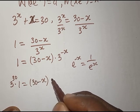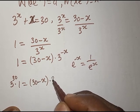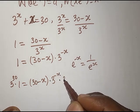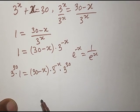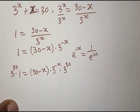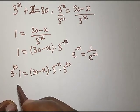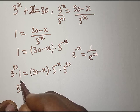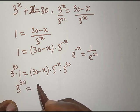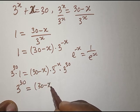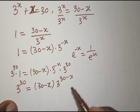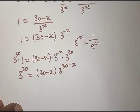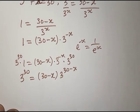Multiplying both sides by 3^30, the right-hand side becomes (30 − x) · 3^(−x) · 3^30, which by the law of indices equals (30 − x) · 3^(30 − x). So we have 3^30 = (30 − x) · 3^(30 − x).